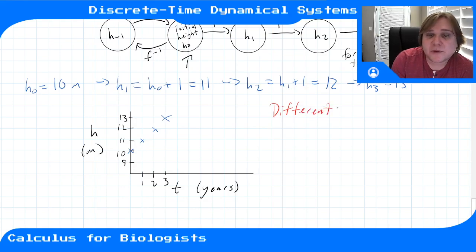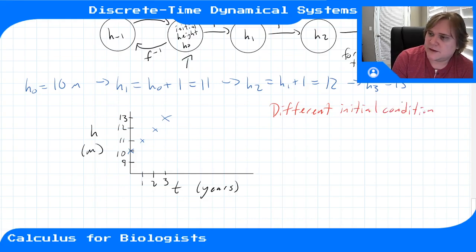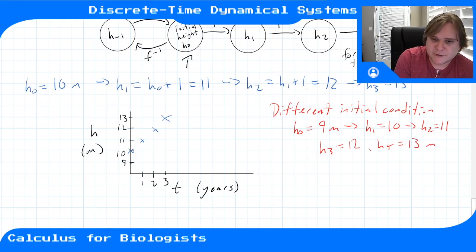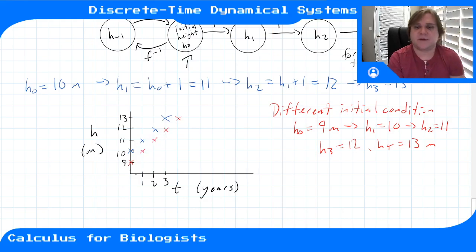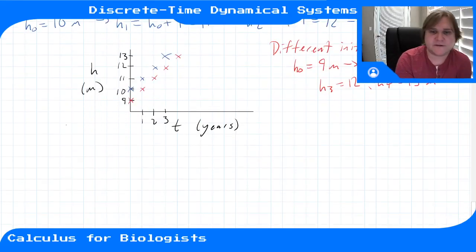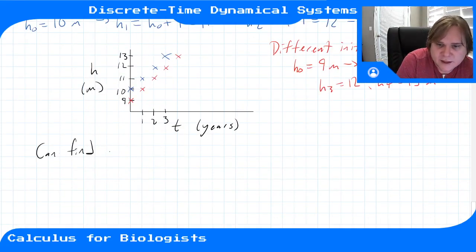If we start with a different initial condition, we get a different solution that looks similar but starts from a different point. Starting at h0 = 9 meters: a year later h1 = 10, h2 = 11, h3 = 12, h4 = 13. Plotting this, it starts at 9 and goes up the same way but at a later time — a different solution to the same dynamical system given a different initial condition.